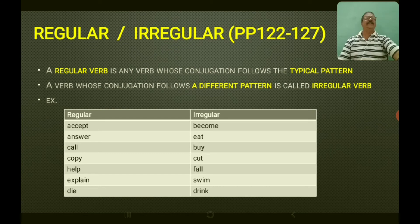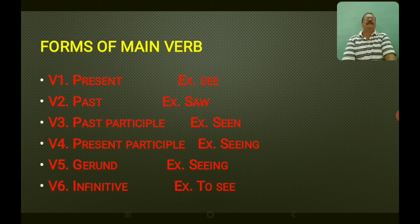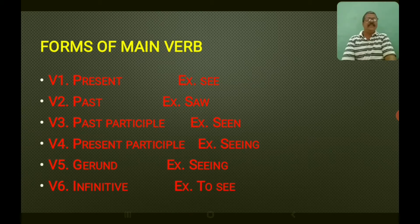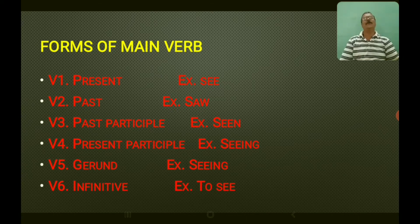Now you find the six forms of main verbs. Watch on your screen: present tense — example 'see'; past tense — example 'saw'; past participle — example 'seen'; present participle — example 'seeing'; gerund — 'seeing'; infinitive — 'to see.' These are the six forms of main verbs. The example I have given is an irregular verb — 'see' is irregular because there is no same pattern.